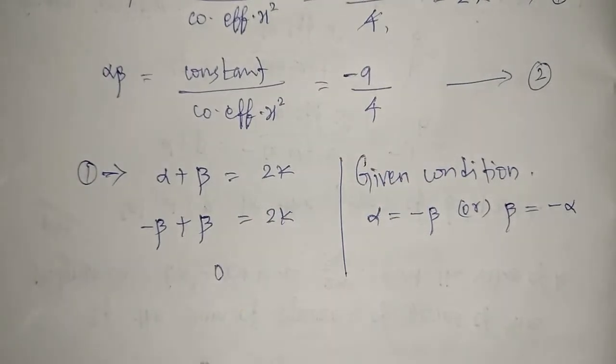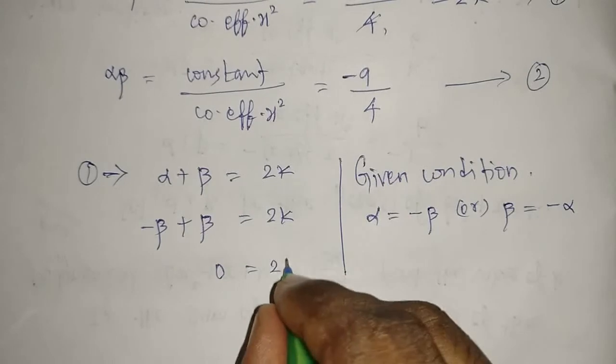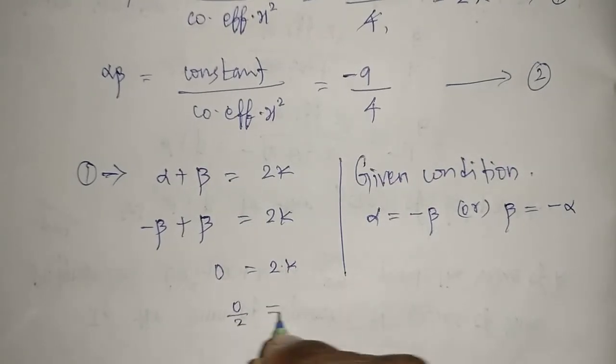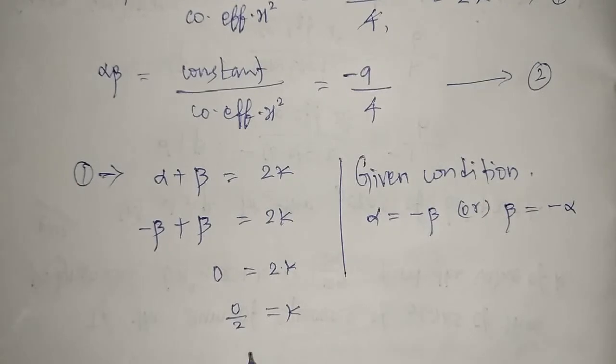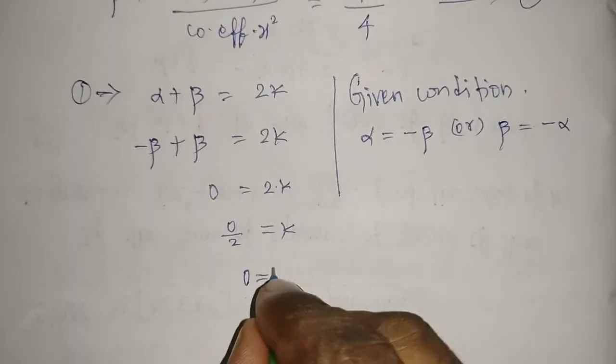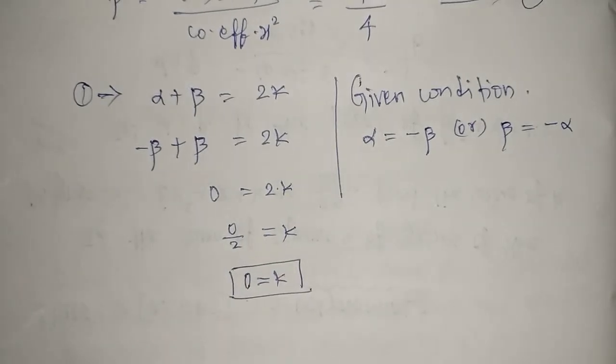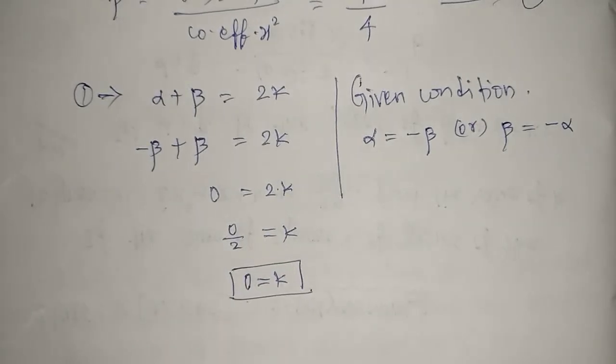Minus beta plus beta, we are getting 0, which is equal to 2k. So this multiple 2 goes to opposite. Now 0 divided by 2 equals k. 0 divided by anything is 0. Then the value of k is 0. This is the value of k.